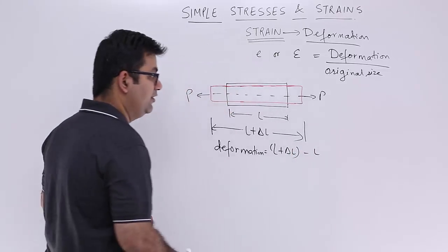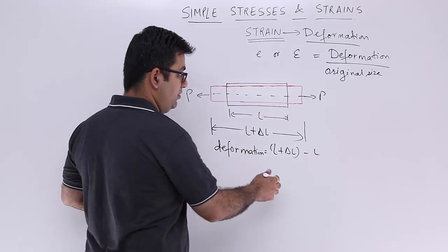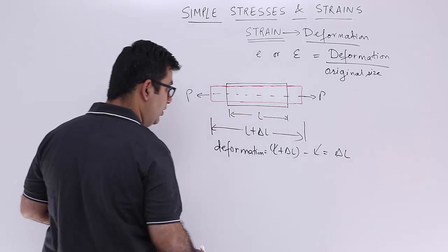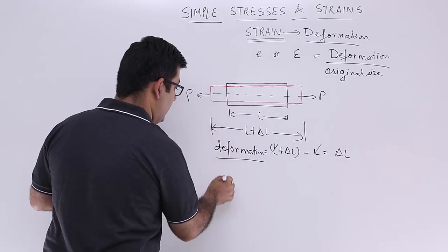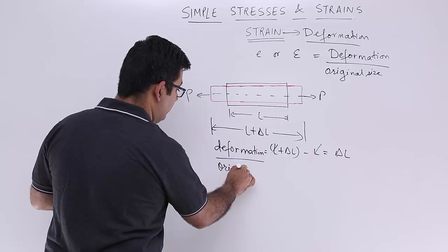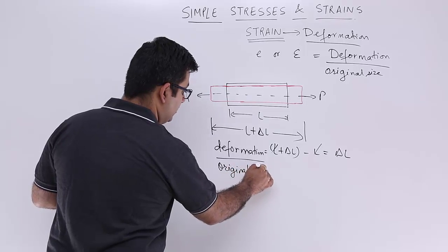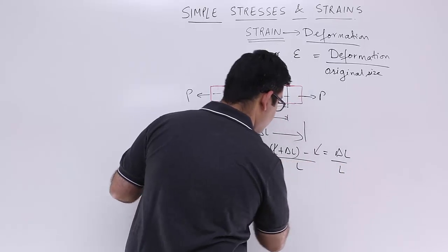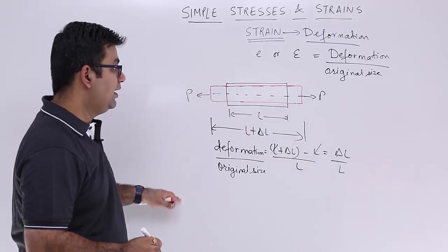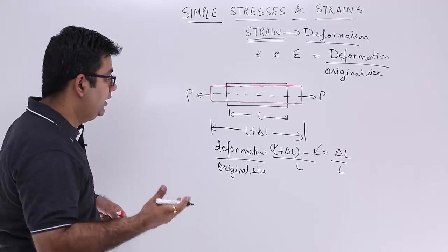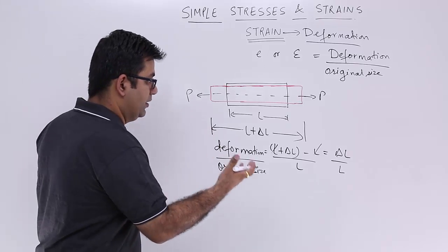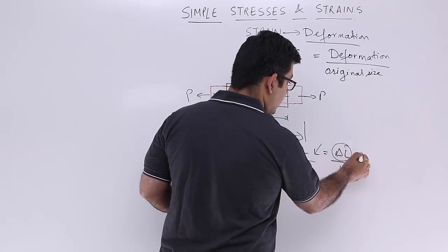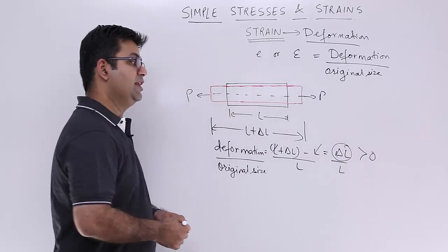Dividing this change in length by the original size L, mathematically strain is nothing but delta L by L, when taking the dimension of length. This is for tensile strain, because this is positive for a tensile loading scenario.